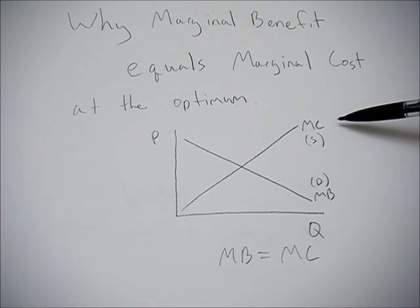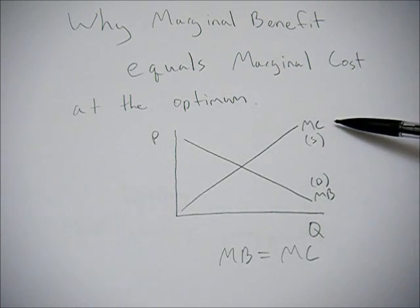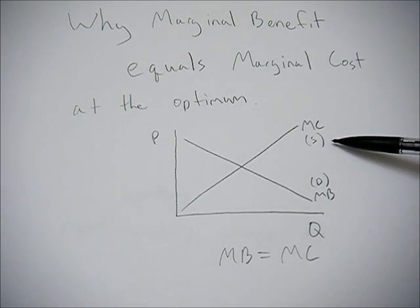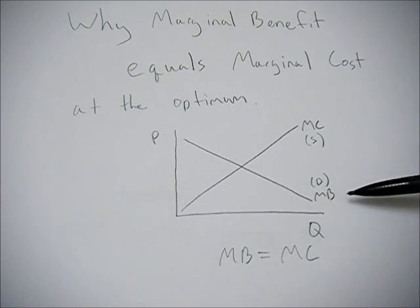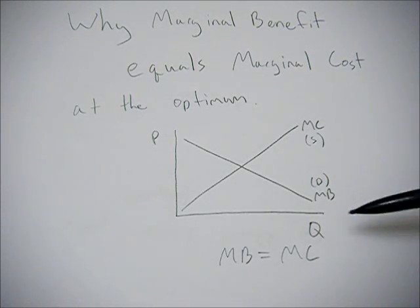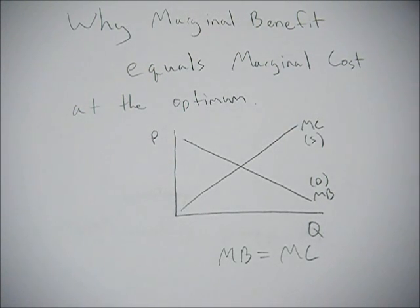When you look at your typical graph, you're going to have an upward sloping marginal cost curve, and this is typically going to be supply, and a downward sloping marginal benefit curve, which is typically demand. Q, quantities on the x-axis, P, prices on the y-axis.